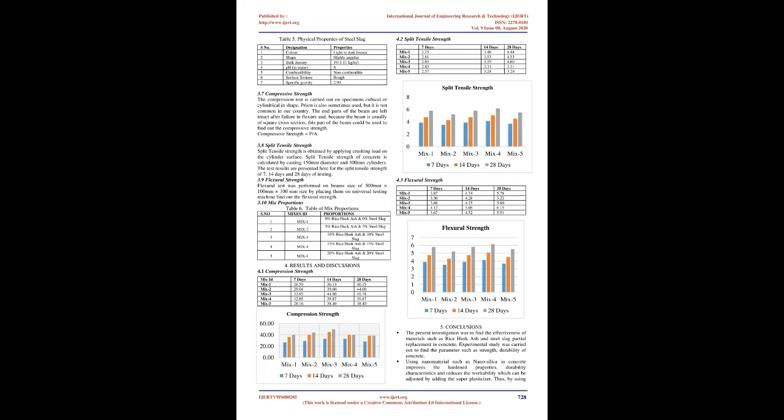3.3 Coarse Aggregates: A machine-crushed angular granite metal of 20 mm nominal size from local source is used as coarse aggregate. It is free from impurities such as dust, clay particles, and organic matter. The coarse aggregate is also tested for its various properties. 3.4 Water: Water is an important ingredient of concrete as it actively participates in the chemical reaction with cement. Since it helps form the strength-giving cement gel, the quantity and quality of water must be carefully considered.